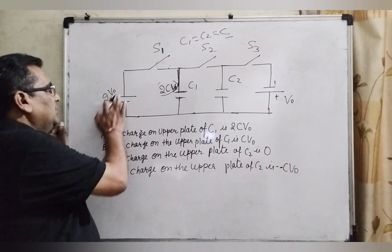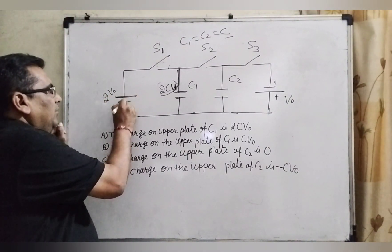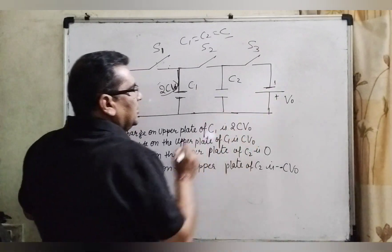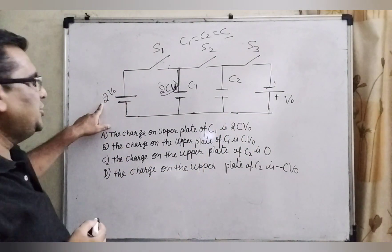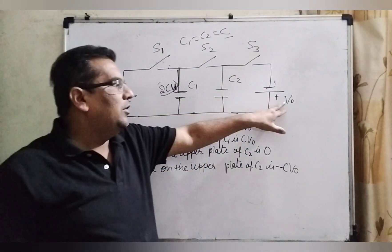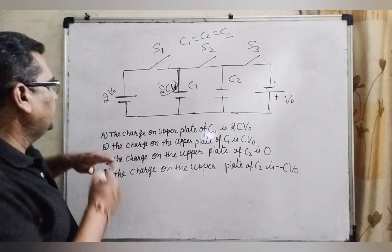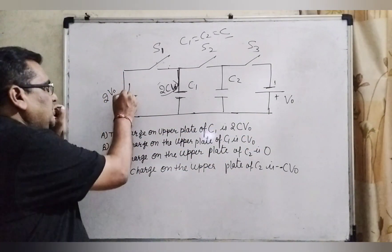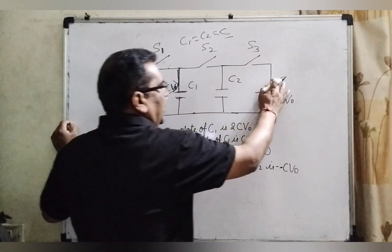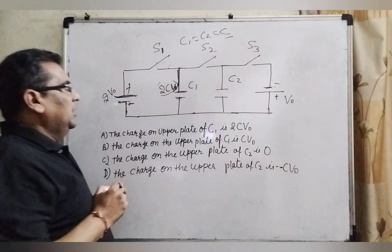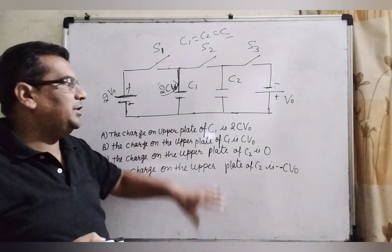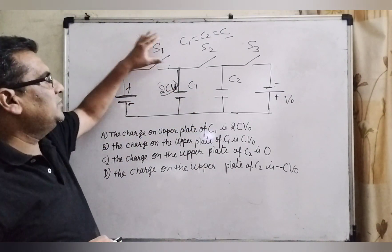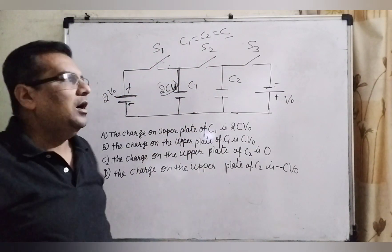Here you can see that at one end and the second end, a battery is connected with potential 2V0 and V0 here. But their terminals are in opposite directions — here positive and negative, and here negative and positive. C1 and C2 capacitors are connected, and S1, S2 and S3 are switches.